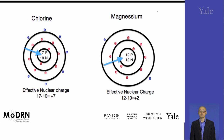The periodic table is more than a display of elements. It also provides a powerful tool for chemists to rationalize the chemical behavior of the elements and design chemical reactions. We'll touch on more of this kind of tendency of physical properties in the following lectures.